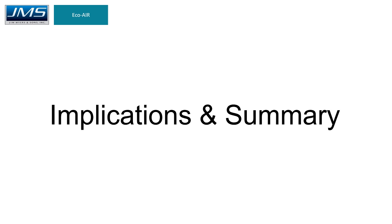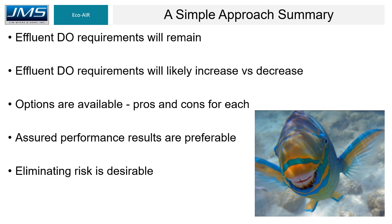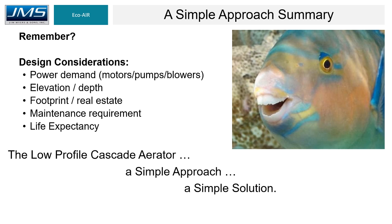In summary: we can expect DO effluent requirements to remain in effect, and they will likely increase as state regulations become more strict. There are several options available, each with their own pros and cons. When considering equipment to increase DO, keep in mind the design requirements: power demand, available elevation and depth, footprint and real estate, maintenance requirements, and expected life expectancy. The low profile cascade aerator — a simple approach, a simple solution.